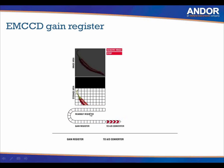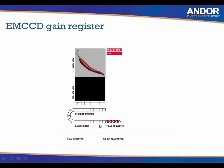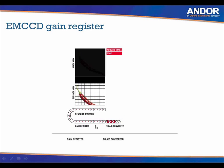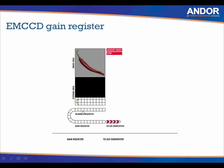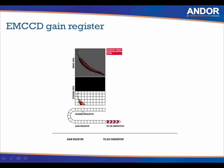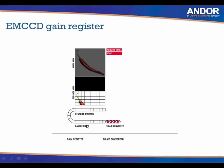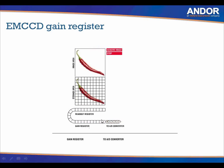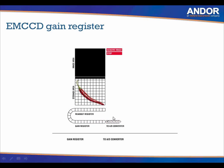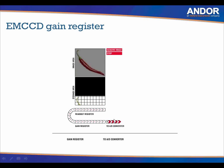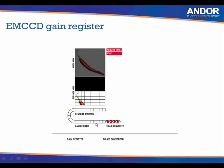In all CCD cameras, there is a readout register, but what is different in EMCCD cameras is the additional gain register. The gain register is where electron multiplication takes place through the action of a voltage applied via software. Through the process of impact ionization, more photoelectrons are created. For example, if you had one photoelectron and applied an EM gain of 300, you would then have 300 photoelectrons. Because all signal amplification takes place before the read noise is applied at the AD converter, the read noise becomes negligible — this is the beauty of EMCCD cameras.